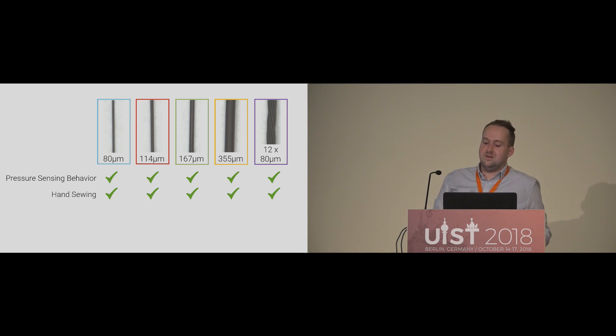While every yarn can be hand sewn, not every yarn can be used for machine sewing or weaving. Our initial tests have shown that the thinnest yarn does not withstand the tensions of a sewing machine, while the thickest yarns were too stiff to be sewn. For weaving, only the thicker single yarns did not work due to stiffness.